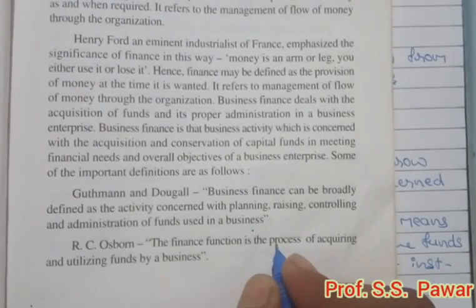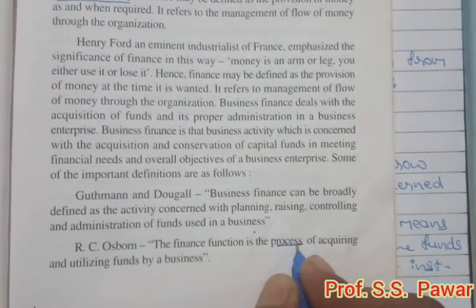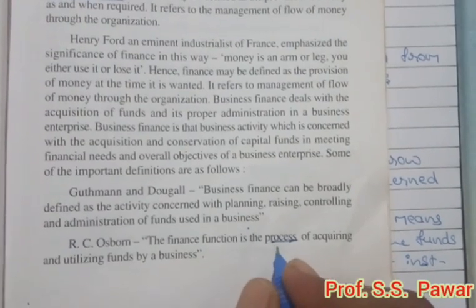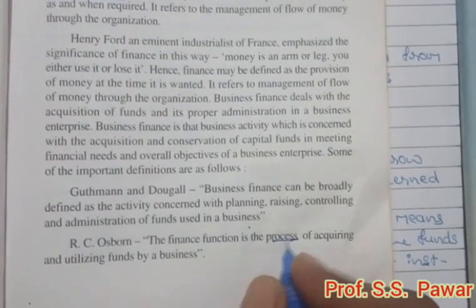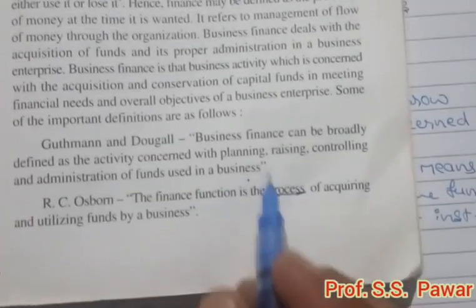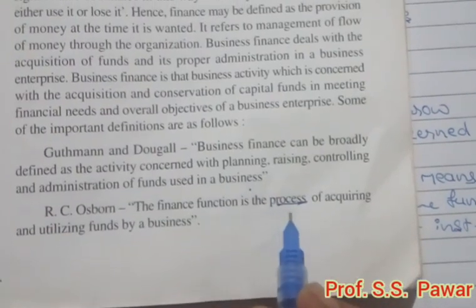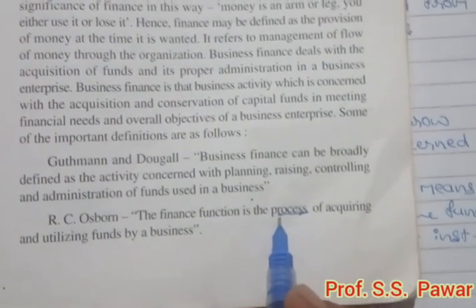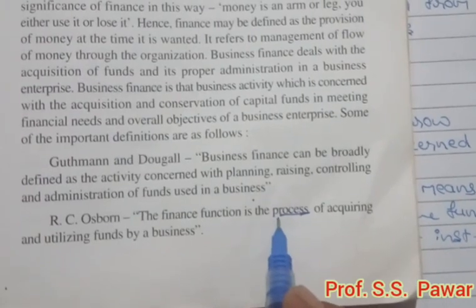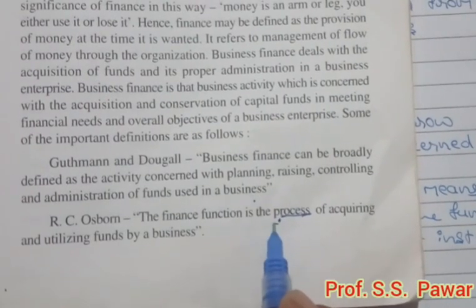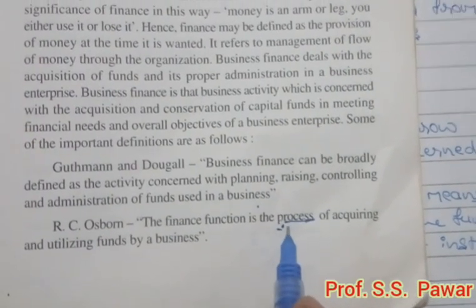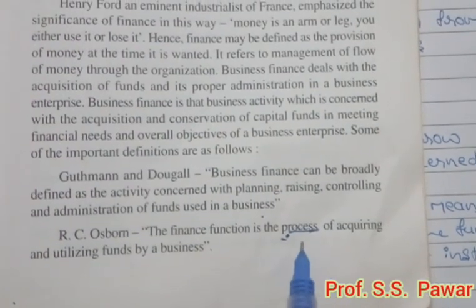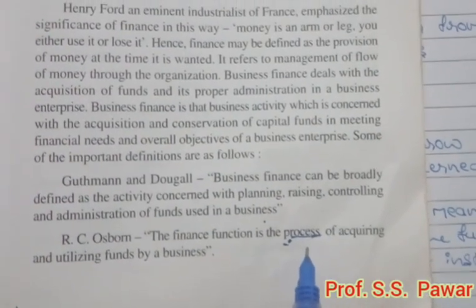Here the word 'process' is used. Process means a number of steps are covered under one word — it is not a single act or single concept; it covers a number of steps or number of acts. So acquiring and utilizing funds by business is the finance function.